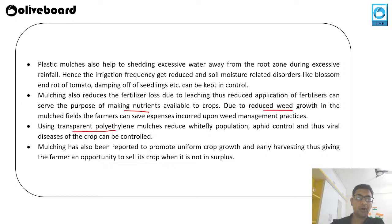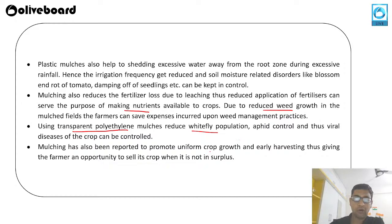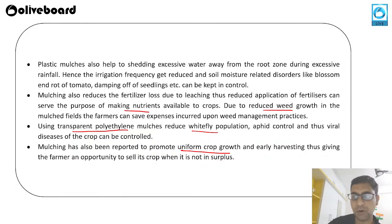Sometimes transparent polythene is used to reduce white fly population, control aphids, and reduce viral diseases to crops. Mulching also helps in uniform crop growth and early harvest, giving the farmer the proper opportunity to sell their crops at the required rate.